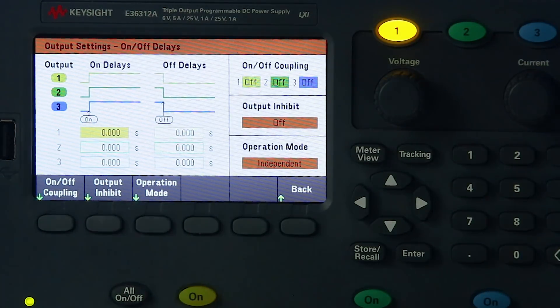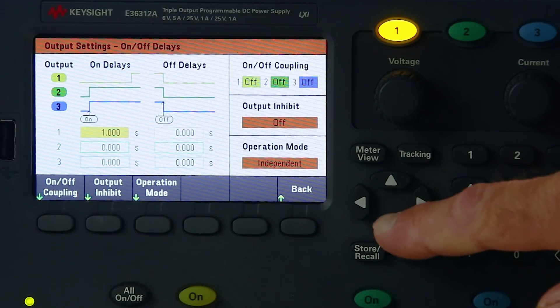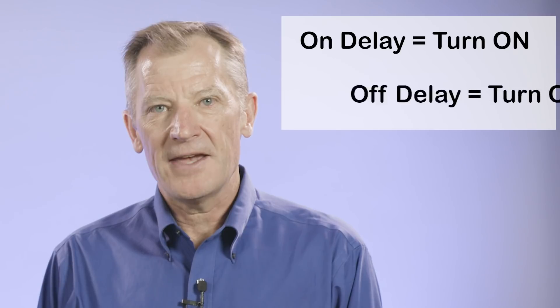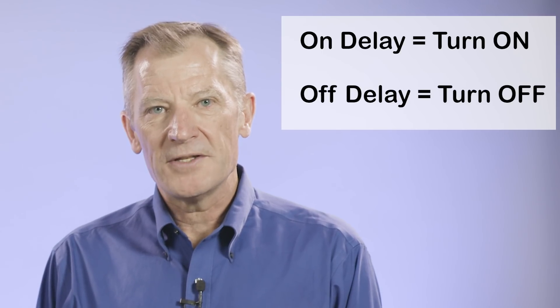I'll configure our on delays and our off delays for each channel. The on delay is how long it waits to turn on after you've started the sequence, and the off delay is how long it waits once you've initiated the end of sequence. The delays can be set with millisecond resolution, but realize that power supply outputs take 10 to 50 milliseconds to reach their programmed voltages. We're going to use rather long delays so that we can see each output turn on and off.